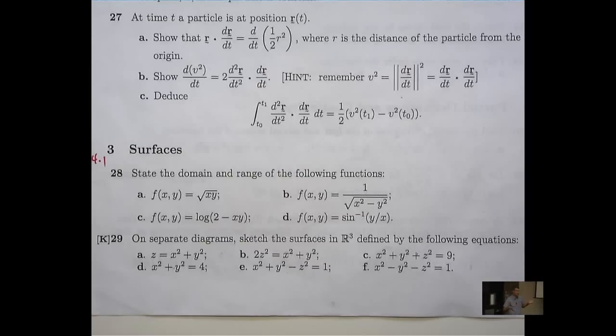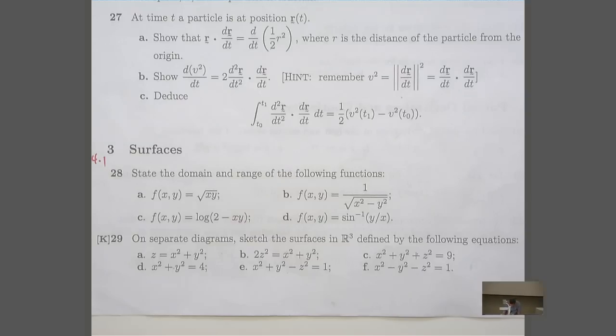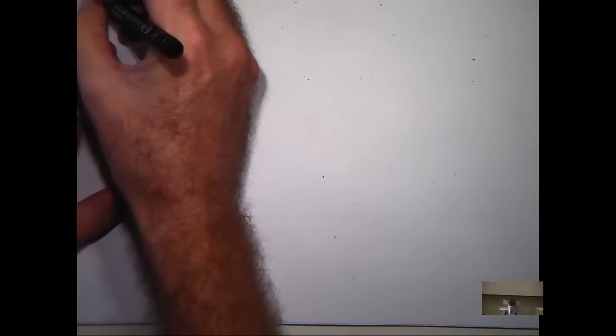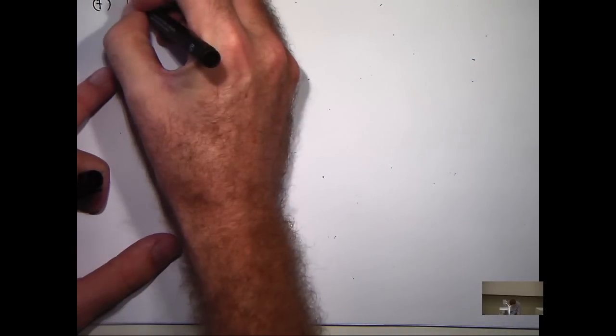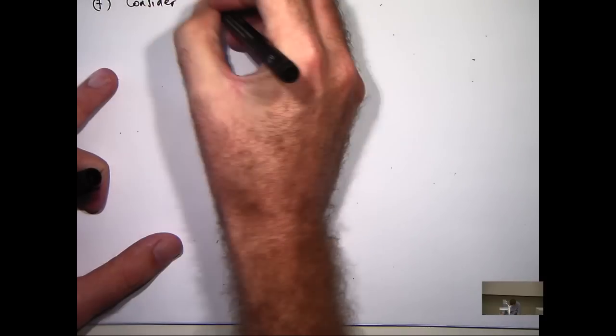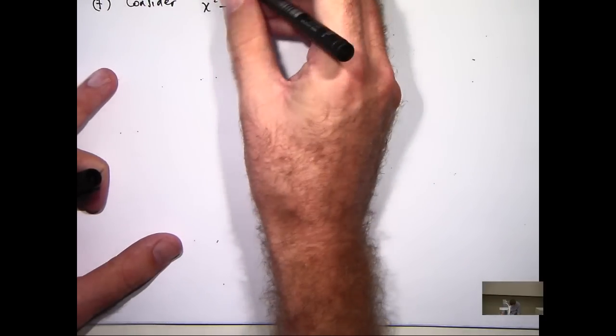In f, we've got x squared minus y squared minus z squared equals 1. How do we deal with that? Well, let's have a look.